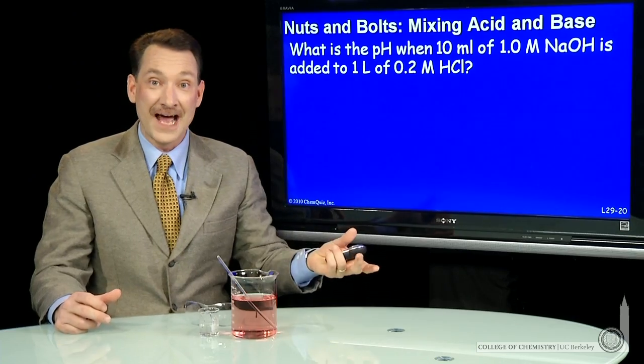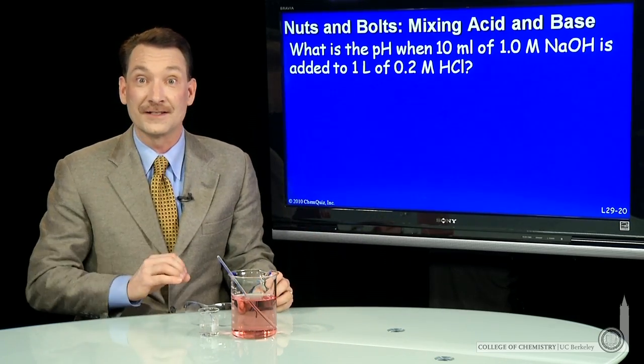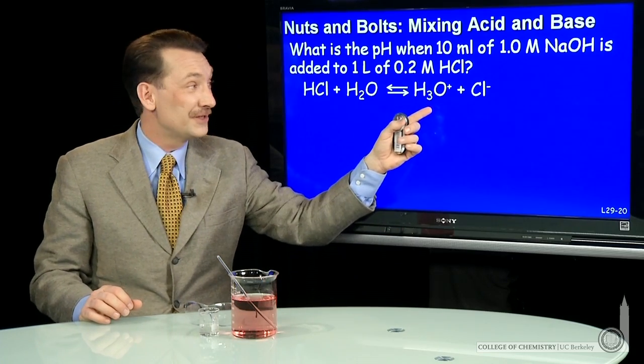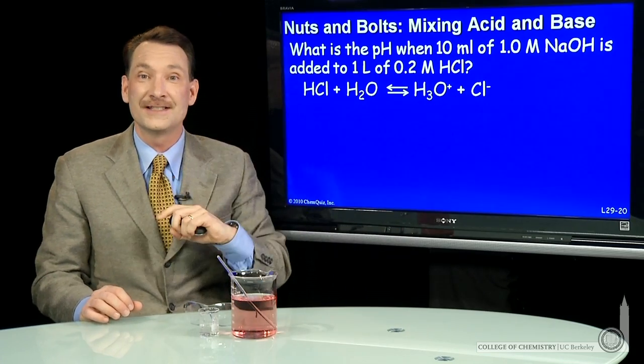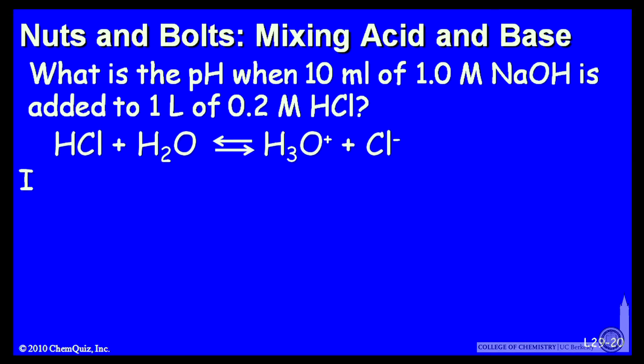Strong acids and strong bases totally dissociate in water. That's the definition of strong acid and strong base. So HCl completely dissociates into H3O plus and Cl minus. We can look at that in steps, though. Here's the initial concentrations, the change, and the equilibrium concentrations.